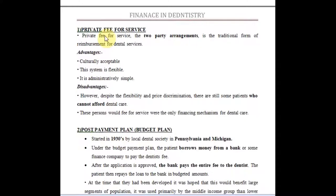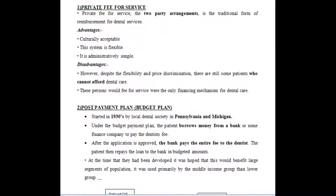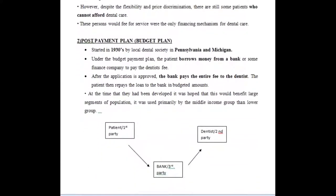That is the biggest problem of private fee for service, which covers around 90 to 95 percent of our country. The next one is the post payment plan. Before discussing it, we need to understand the concept of third party. In private fee for service we have just two parties — patient and dentist. The American system is completely based on a third party arrangement where there is no direct payment of fee to the dentist.